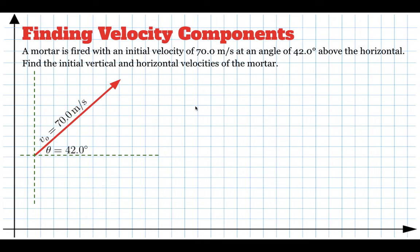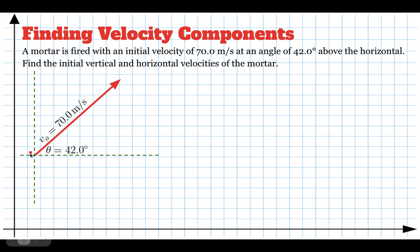We're going to move on soon to problems that involve projectiles that are not launched horizontally. Here's an example of a problem we might encounter. If we have a mortar — which is basically an artillery round — and it's fired at 70 meters per second at an angle of 42 degrees, that means the mortar is fired like this.